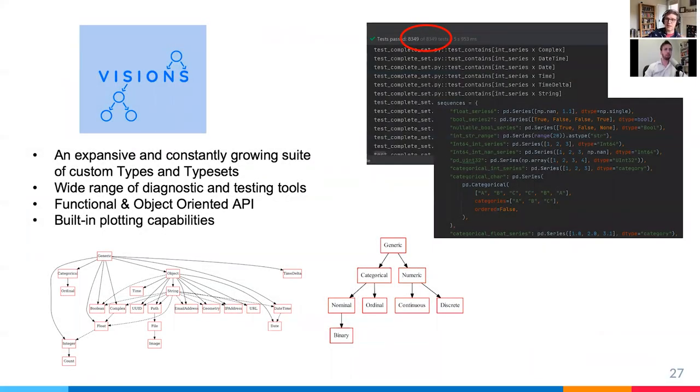So, Visions comes with an expansive and constantly growing suite of types and typesets that should cover most of the most common use cases in practice. Obviously, that means the physical types, integers, floats, strings, so on. But even the less common ones – URLs, files, paths, images, date times, shapely geometries – all are available out of the box and are constantly being expanded. We offer a wide range of diagnostic and testing tools for users if they want to contribute or develop their own types. One of the inherent challenges with this is building something that's robust to all the various types of inputs they can receive. And we found having a toolbox of test data to be extraordinarily useful in that endeavor. We also offer a functional and object-oriented API and built-in plotting capabilities. This is invaluable when it comes to diagnostics.